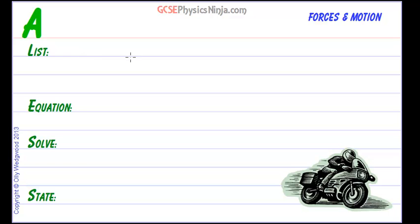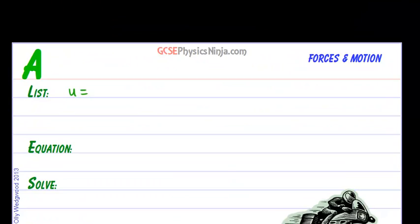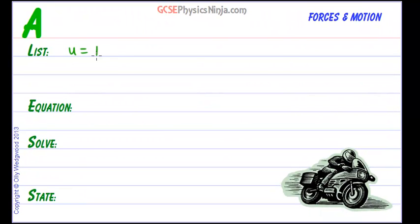Well, we know that our starting initial velocity u is equal to 15 meters per second. We know that our final velocity, easy way to remember it with vinyl, is 35 meters per second.